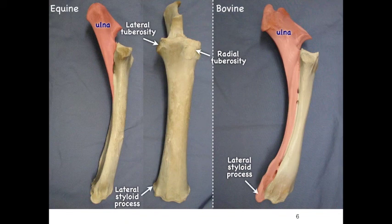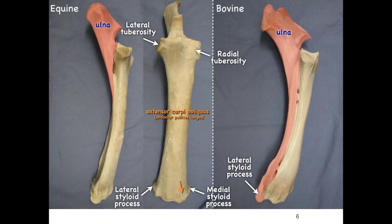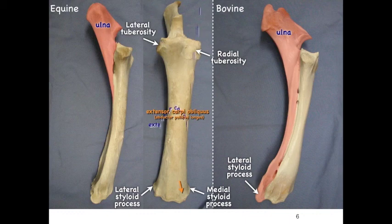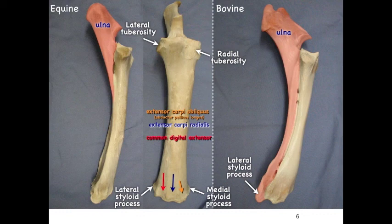Distally we have the lateral styloid process — on the bovine it is actually on the ulna, while on the equine it is on the radius. There may also be a medial styloid process. On the distal end we find grooves and depressions that tendons of muscles pass through. Starting medially, there's a groove for the extensor carpi obliquus muscle. Further down the center is the groove for the extensor carpi radialis. A bit more laterally is the groove for the common digital extensor, and along the lateral portion we find the groove for the lateral digital extensor.